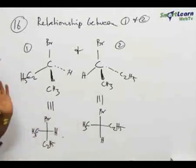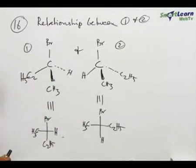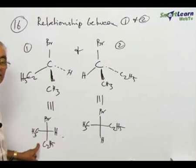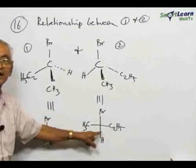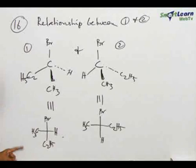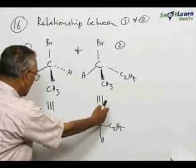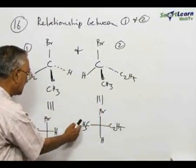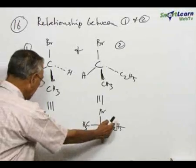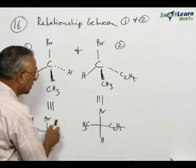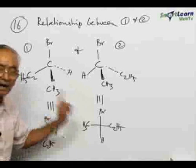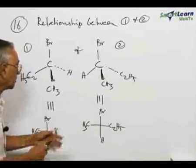Now, what is the relationship between the two? Apply the same rule: keep one structure constant and try to make the second structure identical with the first structure. Now, Br matches exactly with Br, CH3 also matches exactly with CH3, but when you bring the C2H5 here and H over here, that is by means of one interchange, you can compare the two compounds.